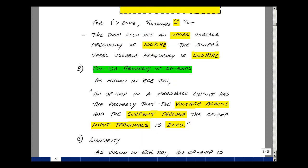In ECE 201, we introduced an op-amp and used the idea of no voltage and no current. Let me just restate that property. An op-amp in a feedback circuit has the property that the voltage across and the current through the op-amp input terminals is equal to zero.